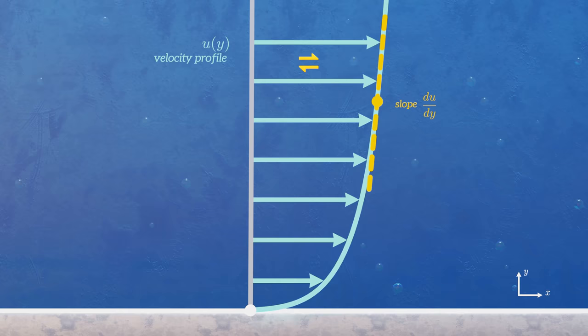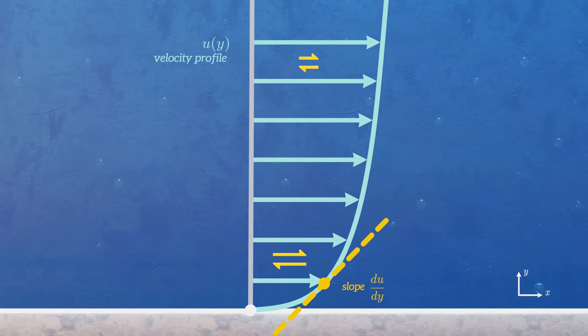The slope is small in the free stream. The fluid layers are moving at almost exactly the same velocity and so the shear stress will also be very small. But close to the wall, the velocity changes very suddenly. In this region, the slope is large, and so the shear stress is also large.